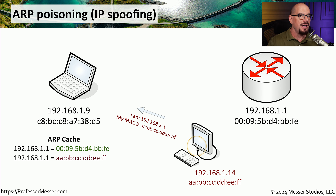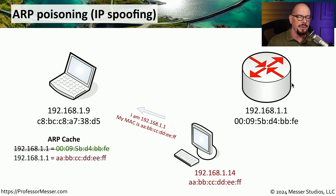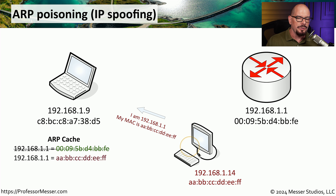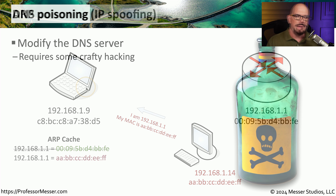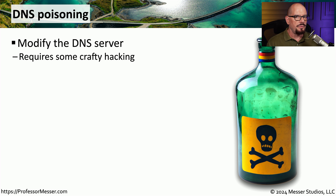From this point forward, any traffic sent from this device to the router will first be sent to the attacker. Very commonly, the attacker will then forward that information on to the legitimate router. This means that neither the victim device nor the router realizes there is an attacker in the middle of the conversation intercepting and forwarding all of the traffic sent between these two devices.